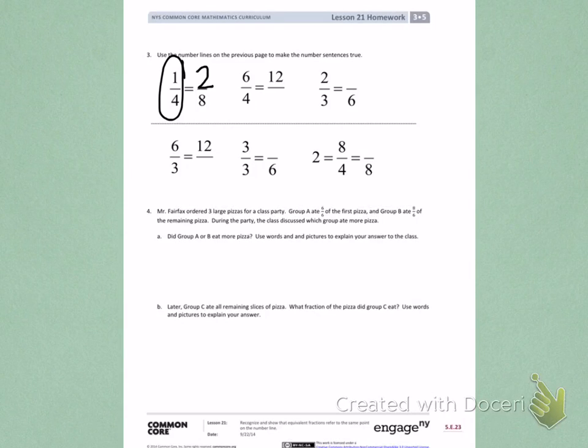1 fourth equals 2 eighths. Now flip back on the front and find the fraction 6 fourths. Move your finger down to the bottom of the number line and find the fraction that is equivalent to 6 fourths that has 12 as the numerator.